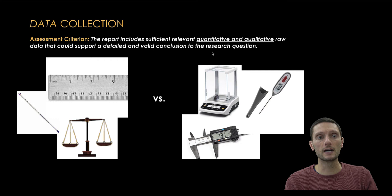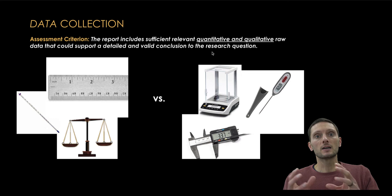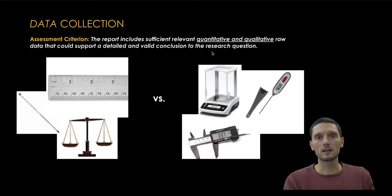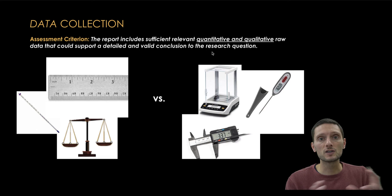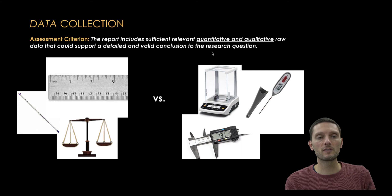Quantitative data differs from qualitative data in that qualitative data is a collection of observations using words — what we see in terms of shapes, colors, sizes, changes in physical appearance. Those are qualitative data. An easy way to think of this: qualitative data is words, quantitative data is numbers.